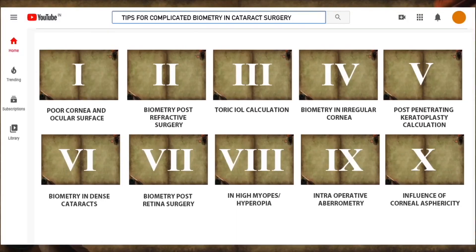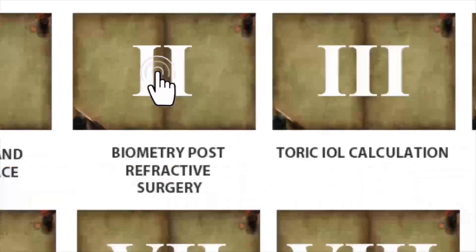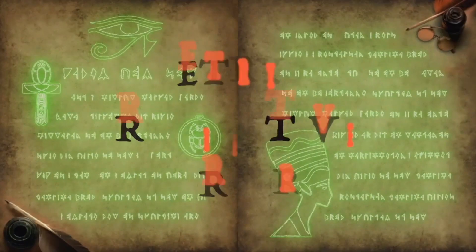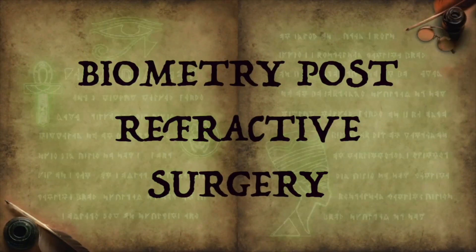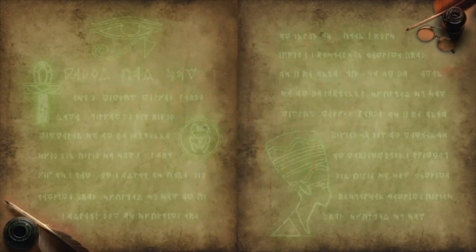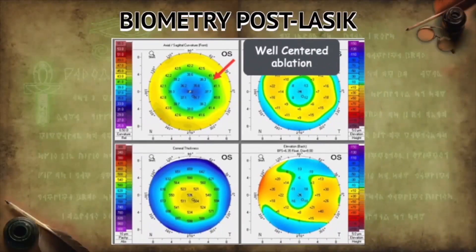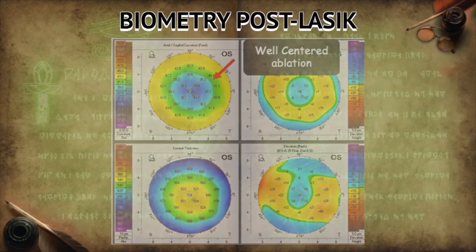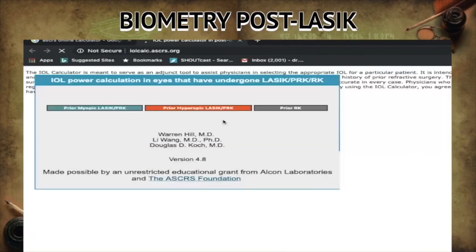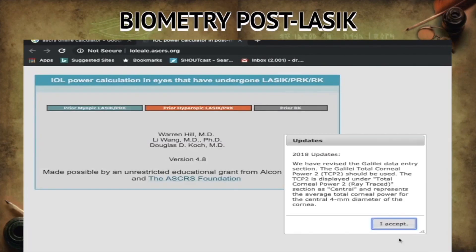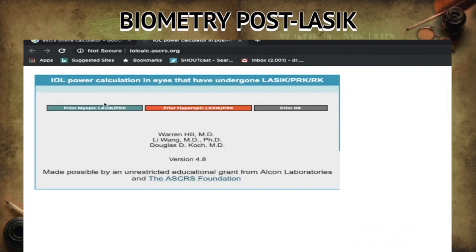The next scenario is biometry post-refractive surgery. In cases with well-centered ablation, to calculate the intraocular lens power we can use the ASCRS online calculator, which is freely available.